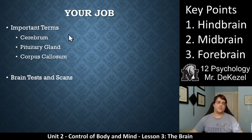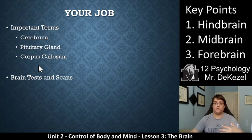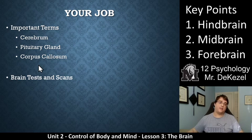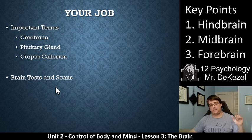The important terms for this lesson include the cerebrum, pituitary gland, and corpus callosum. We are going to talk about the corpus callosum in more detail in the next lesson, so please look it up beforehand. There is also a brain tests and scans assignment — check out a couple of different types, most commonly the MRI and CT scans. If you have any questions, please let me know. Thank you for watching, and I will see you soon.